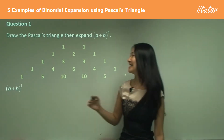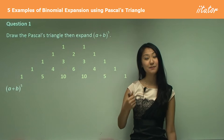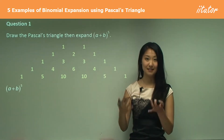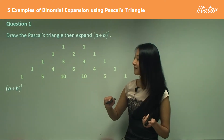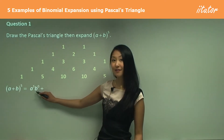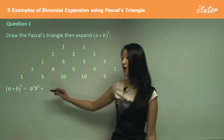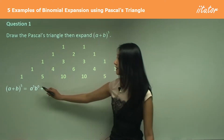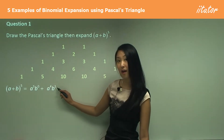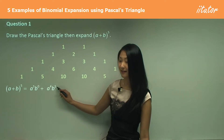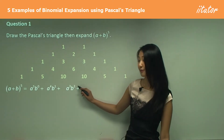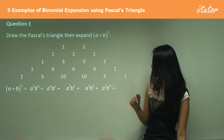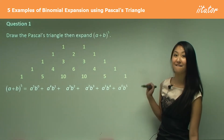So what we need to do now is expand that. We have three steps: the first step is to expand, the second is to put in the coefficients, and the third is to simplify. For step one, we start with a to the power of five, b to the power of zero, and end with a to the power of zero, b to the power of five. Fill in the ones between: subtract one from a, add one to b each time. So we get a⁵b⁰, a⁴b¹, a³b², a²b³, a¹b⁴, a⁰b⁵.